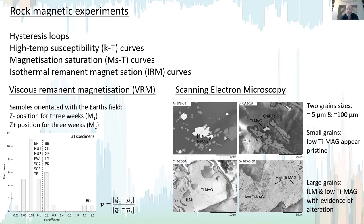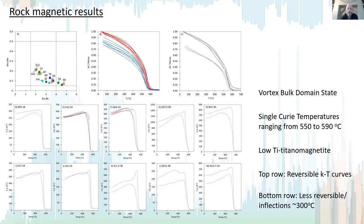In the SEM images, the top two images show very fine, low-titanium magnetite grains which appear pristine, compared to the bottom two images which show much larger grains with ilmenite and low-titanium magnetite with evidence of alteration.